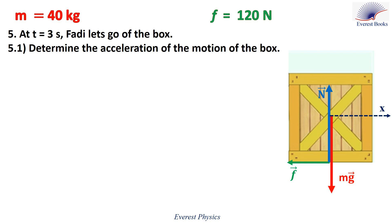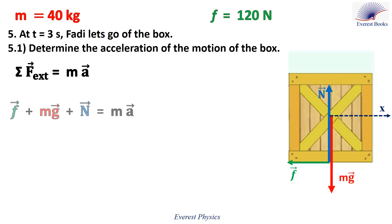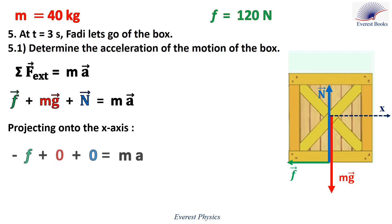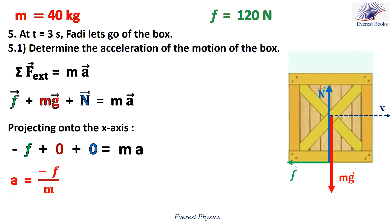Part 5.1: determine the acceleration of the motion of the box after time three seconds. Applying Newton's second law — after time three seconds, there is no force exerted by Fadi on the box, so we still have three external forces: the friction, the weight, and the normal force. Projecting along the x-axis: the projection of the friction is minus F, the weight is 0, and N is also 0. Rearranging, we get A equals minus F_friction over M. Replacing F with 120 and M with 40, therefore A equals minus 3 meters per second squared.